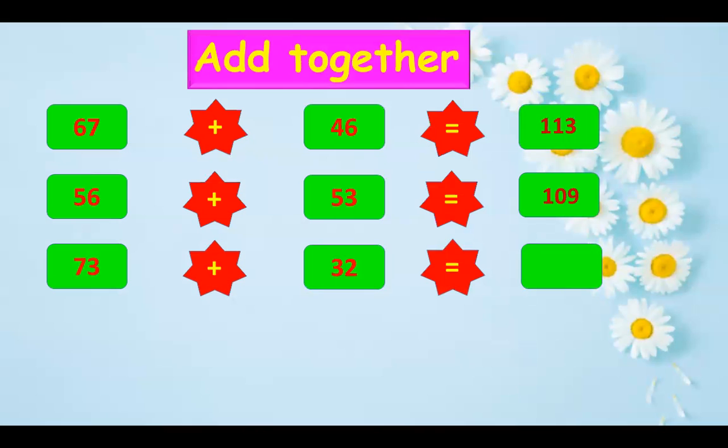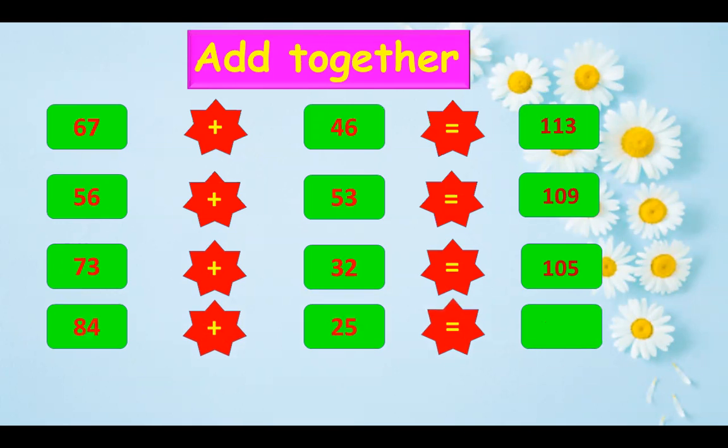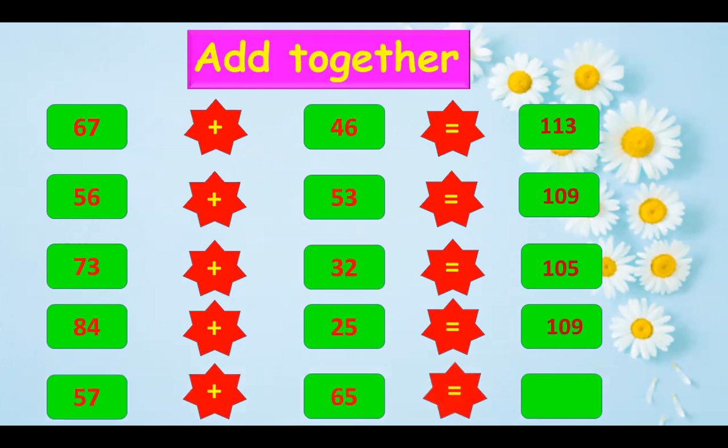73 plus 32 is 105. 84 plus 25, it's 109. And 87 plus 65 is 122.